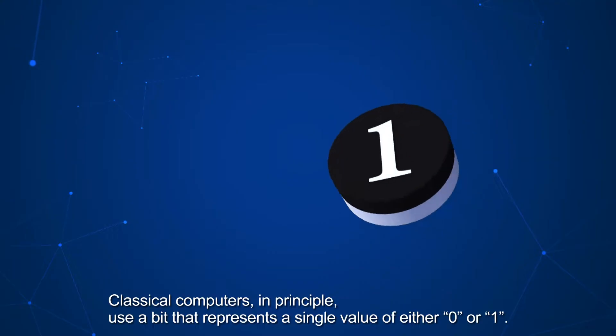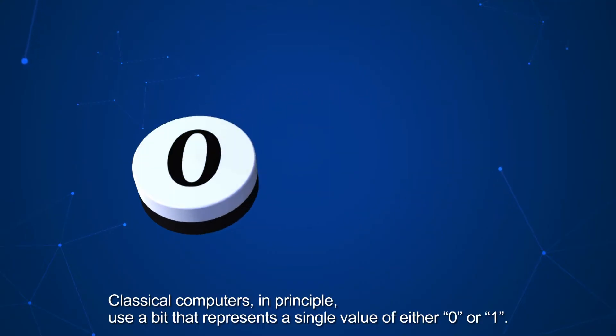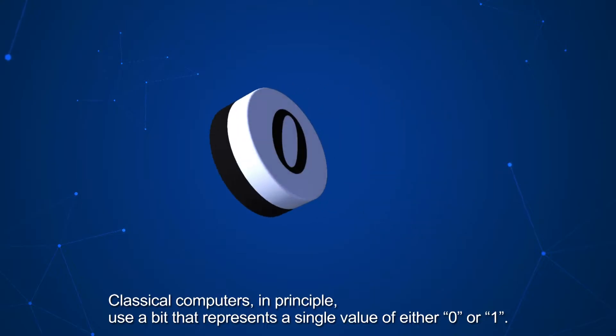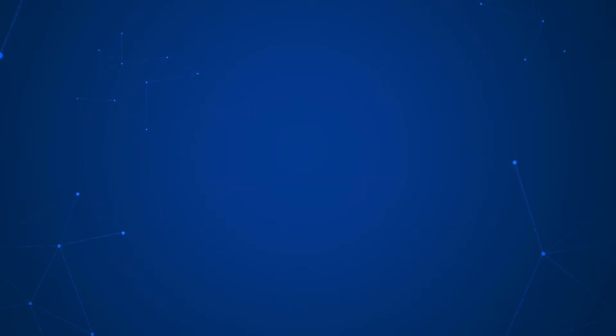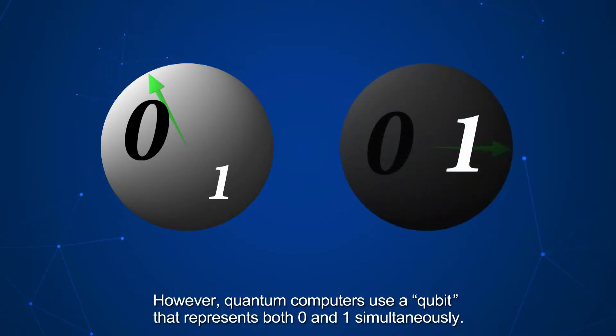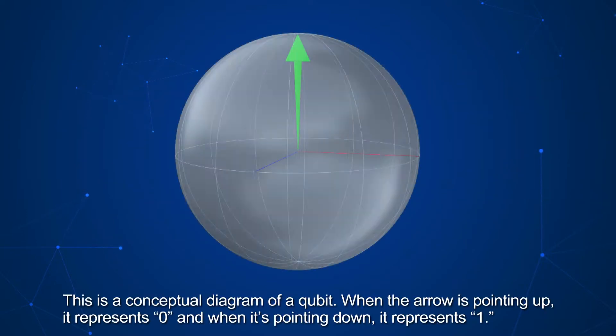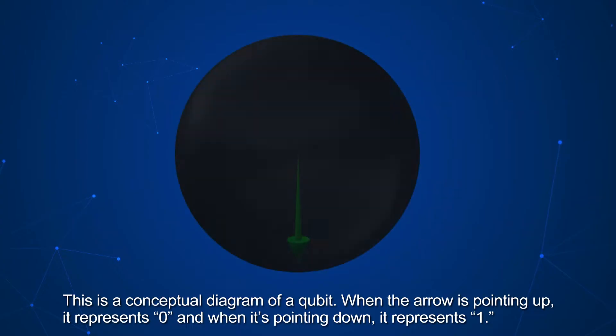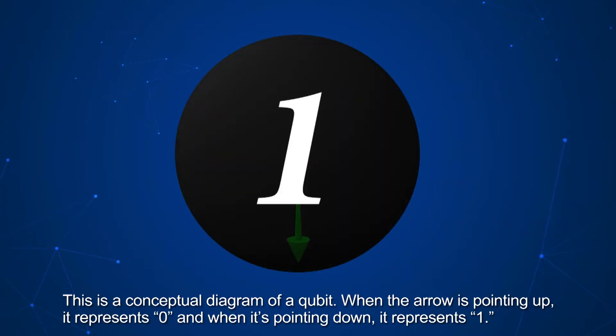Classical computers, in principle, use a bit that represents a single value of either 0 or 1. However, quantum computers use a qubit that represents both 0 and 1 simultaneously. This is a conceptual diagram of a qubit. When the arrow is pointing up, it represents 0, and when it's pointing down, it represents 1.